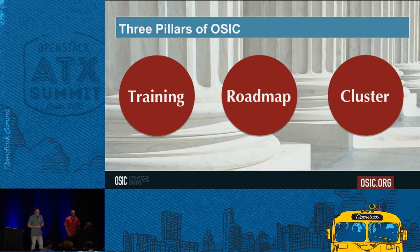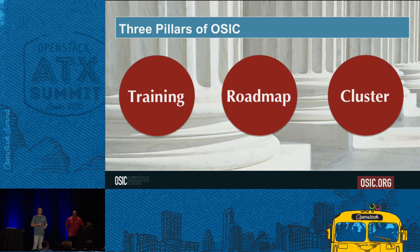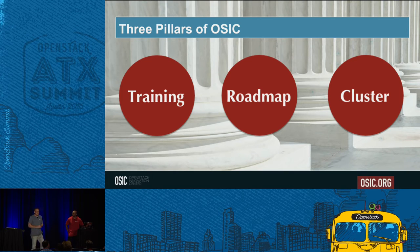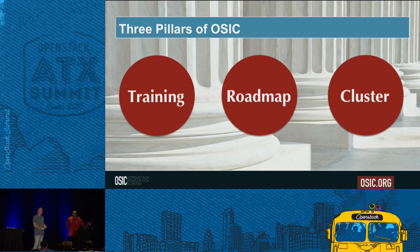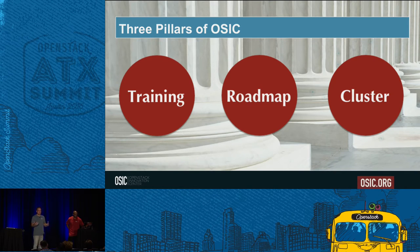Roadmap — we're also going to have a significant amount of upstream contributions. If you want to see our roadmap, OSIC.org. Within that roadmap, we're primarily looking at simplicity, manageability, scalability, and reliability. What that looks like is a lot of early operations, deployment, day two activities, and different projects. We're not trying to create our own new stuff — we're trying to make the OpenStack world better.